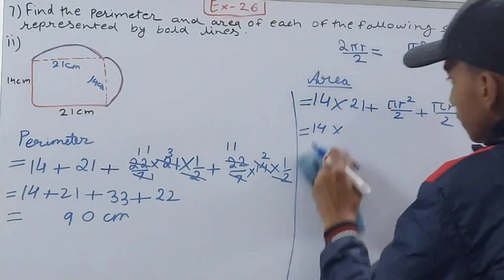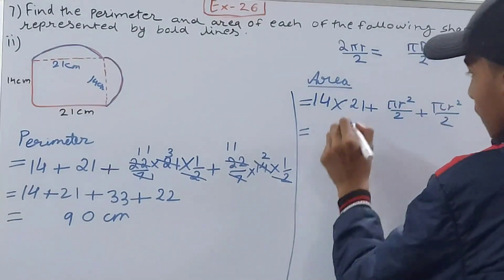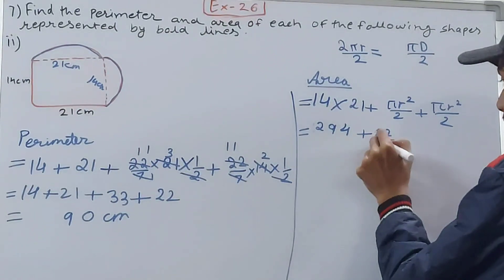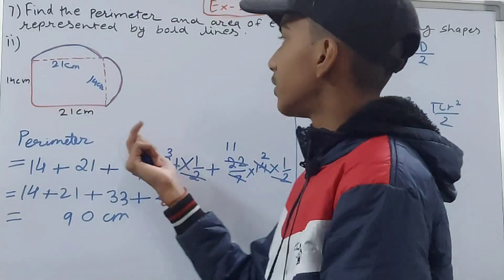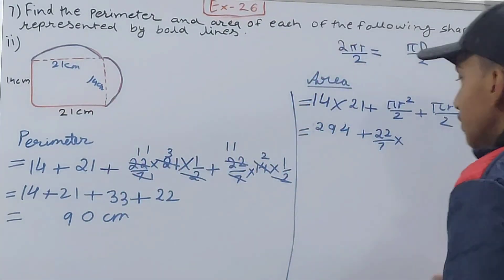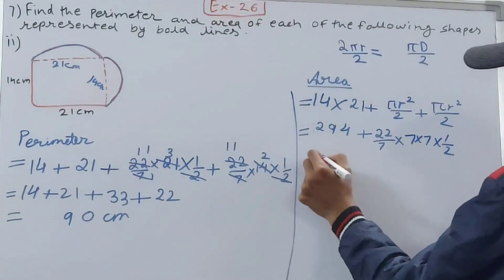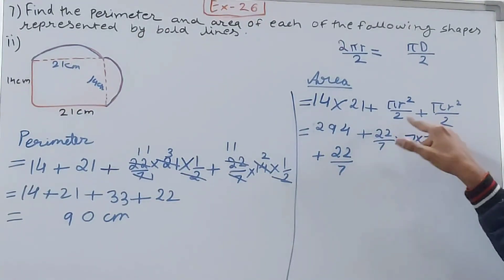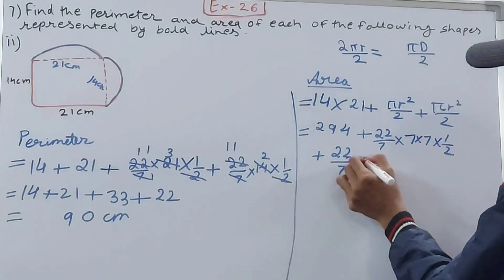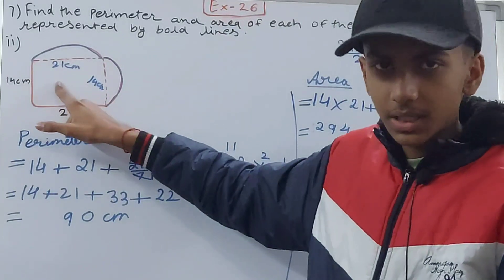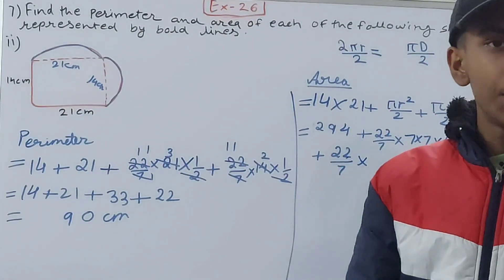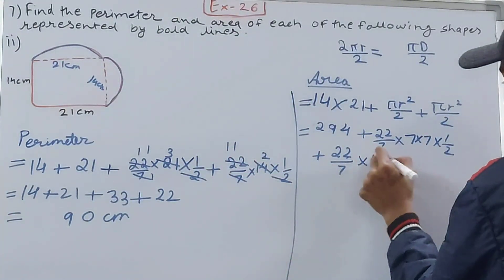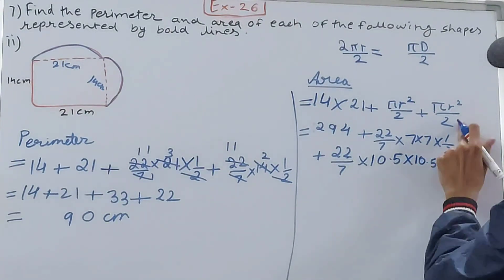Area of rectangle = 14 × 21 = 294. For the first semicircle, diameter is 14 cm so radius = 7 cm: (22/7) × 7² × (1/2). For the second semicircle, diameter is 21 cm so radius = 10.5 cm: (22/7) × 10.5² × (1/2).